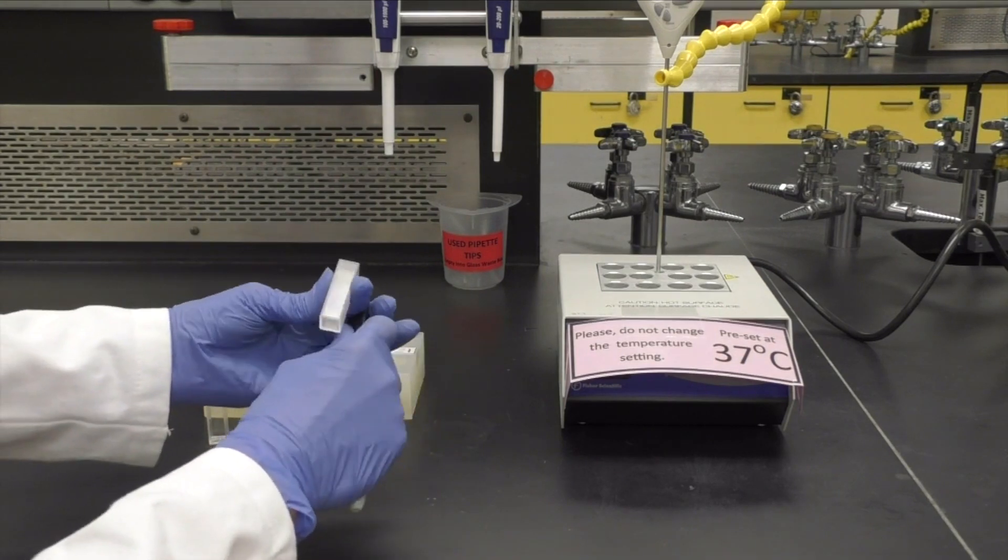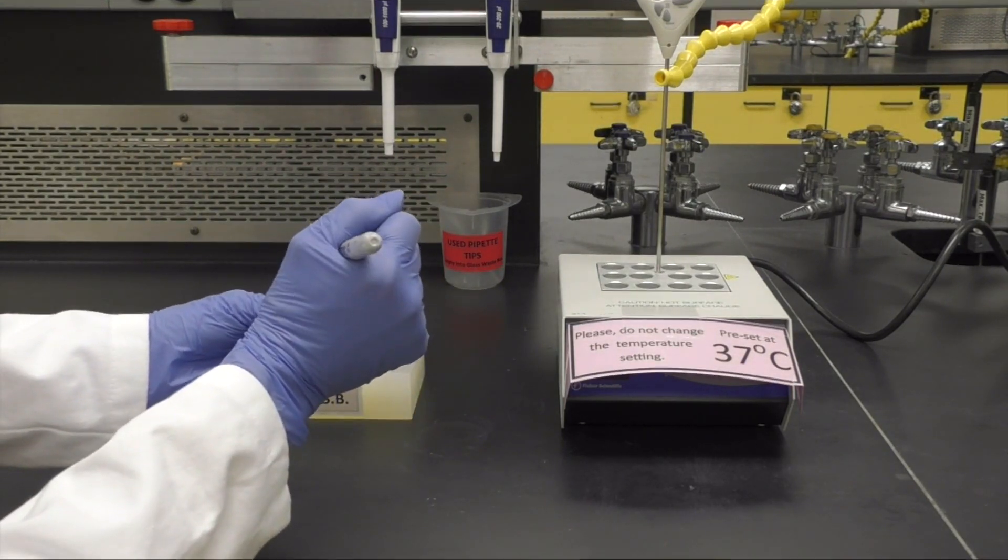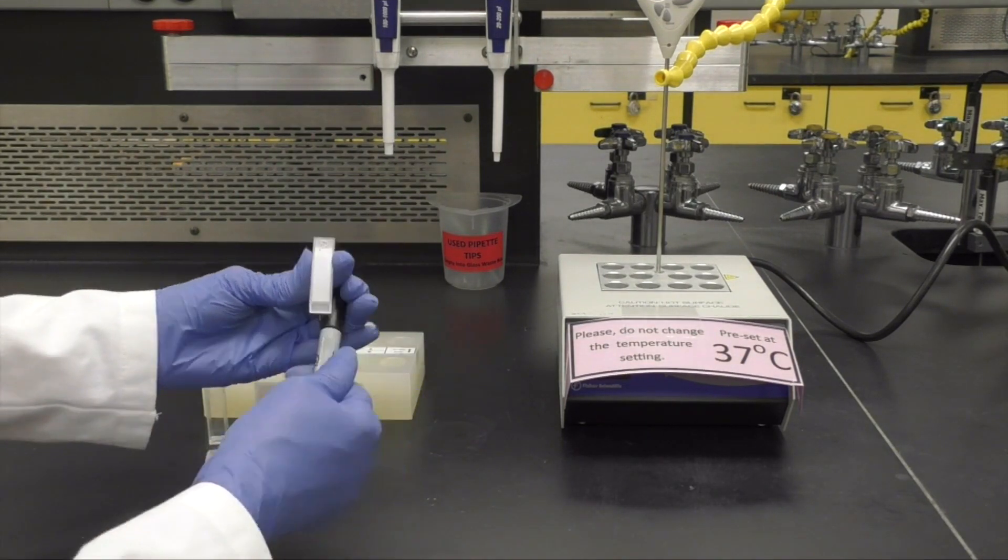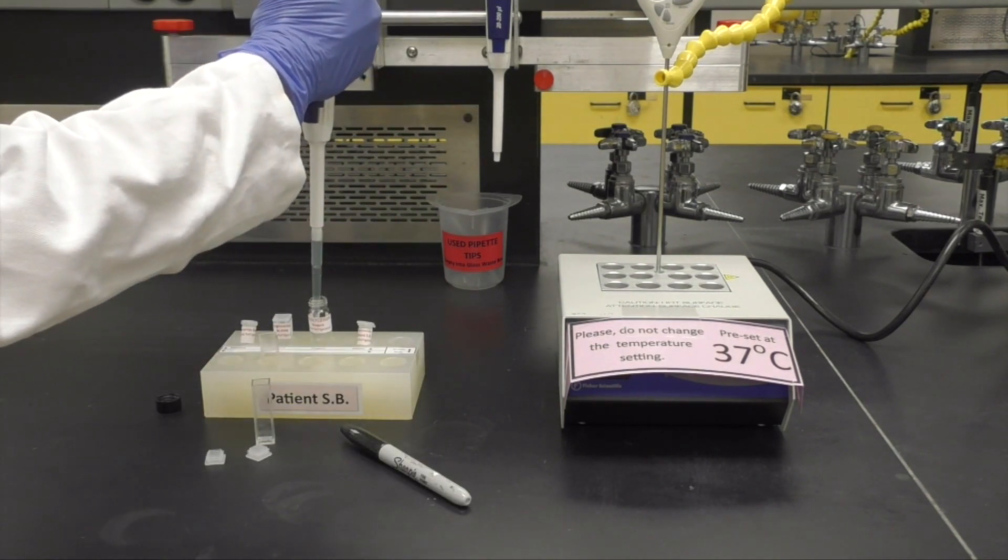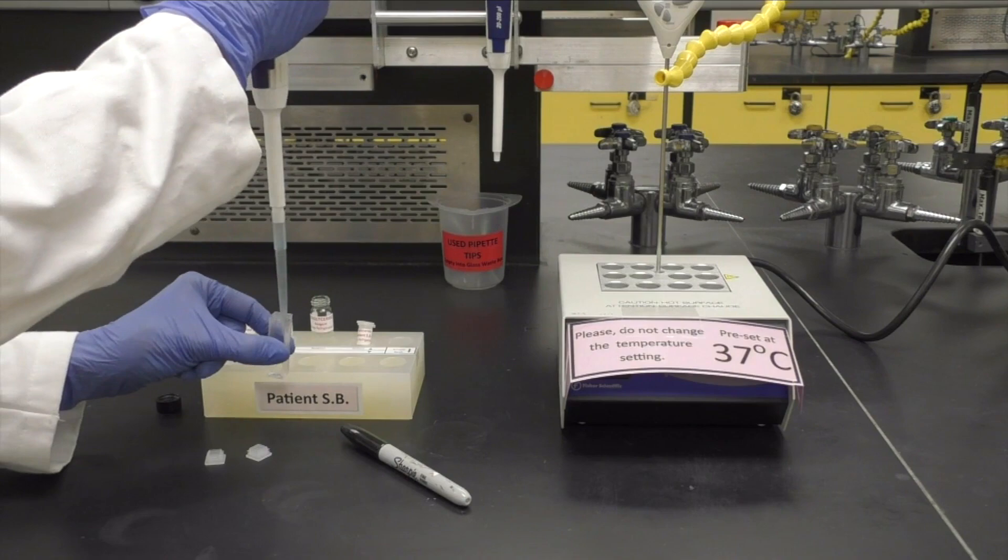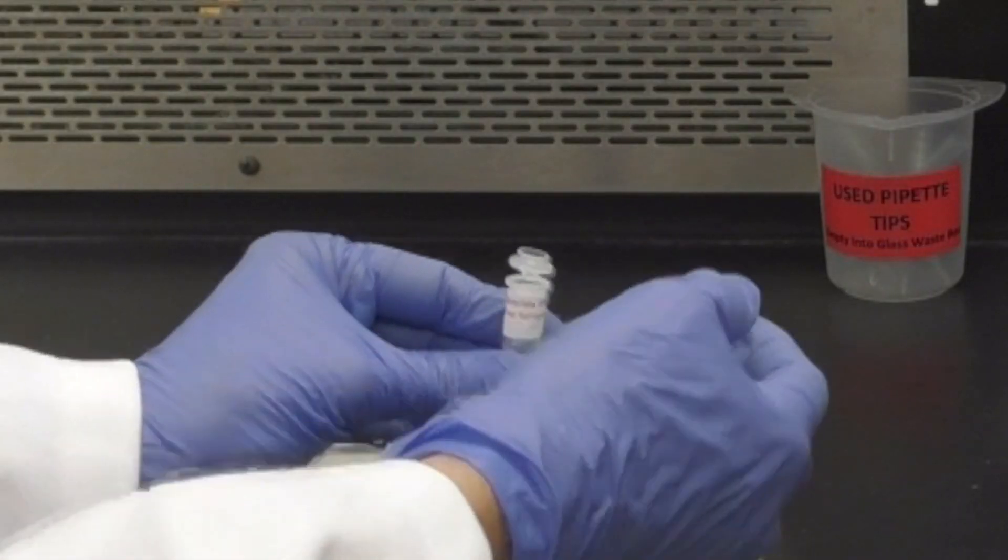To prepare your samples, use a sharpie to label your cuvettes. Add 1 milliliter, in other words 1000 microliters, of the triglyceride reagent to each cuvette.